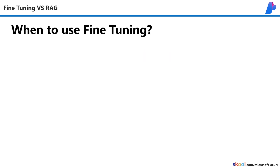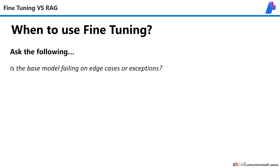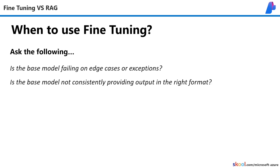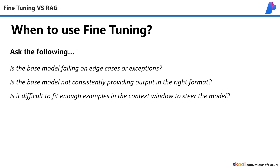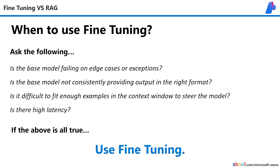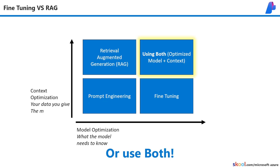So when should we use fine-tuning? To answer this, we should ask the following: Is the base model failing on edge cases or exceptions? Is the base model not consistently providing output in the right format? Is it difficult to fit enough examples into the context window to steer it? Is there high latency? If the answer is yes to any one of these questions, you still might weigh the pros and cons of fine-tuning versus RAG to decide what's best for your needs. But if all of these are true, you should use fine-tuning. You could also decide to use both strategies, depending on how much of the benefits and downsides you're willing to have for each.